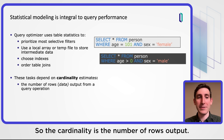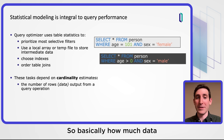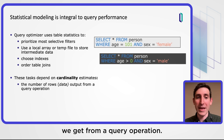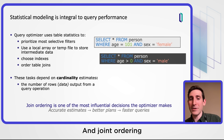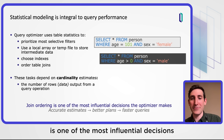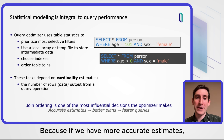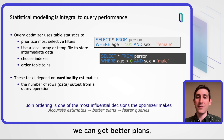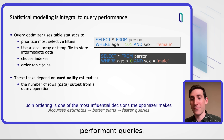The cardinality is the number of rows output — basically how much data we get from a query operation. And join ordering is one of the most influential decisions the optimizer makes, because if we have more accurate estimates, we can get better plans, and these can give us more efficient performance queries.